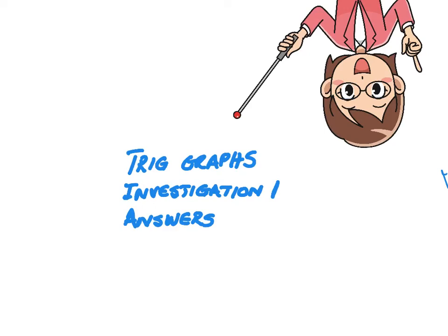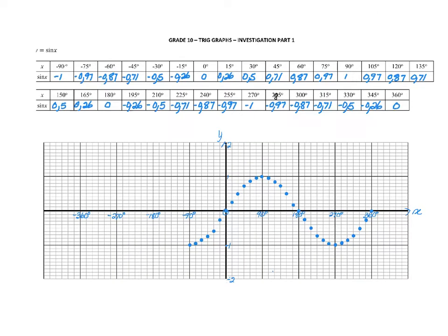Let's go through investigation one. The first part you had to complete was this table, and you can pause the video to check your answers. After completing the table, you transcribed it into points on the Cartesian plane. You can already see that this makes an unusual shape — something you haven't dealt with before. Joining the dots, we get our first sine graph.